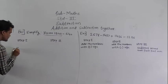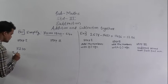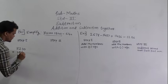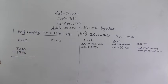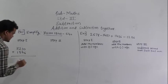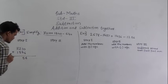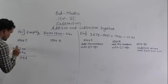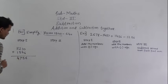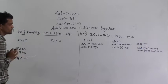Solve 3,210 plus 1,546. This is our first step. Add the values: 0 plus 6 is 6, 1 plus 4 is 5, 2 plus 5 is 7, 3 plus 1 is 4. So 4,756 is the sum of these 2 numbers.